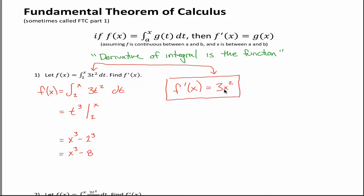All the fundamental theorem of calculus tells you is that if you're in this somewhat contrived situation where a function is defined in terms of a definite integral and the upper bound on that definite integral is the variable x, then f prime of x — the derivative of this function, the derivative of this integral — is just going to be this function right here. You essentially just copy this. You have to change the letters: instead of a t, it's an x. So the answer was 3x squared. I knew that right off the bat, but really the purpose in our class is understanding why this works.